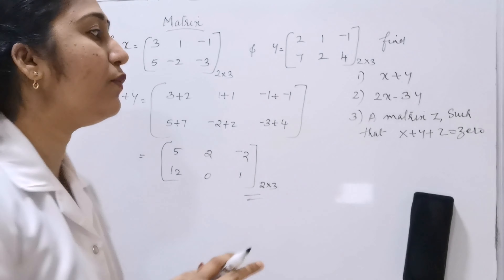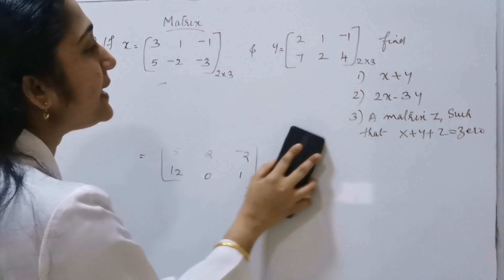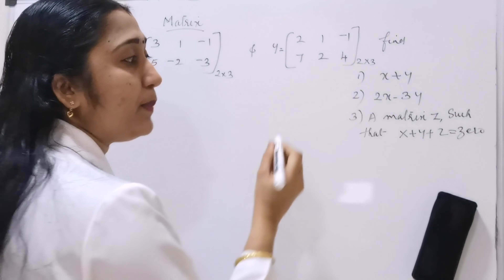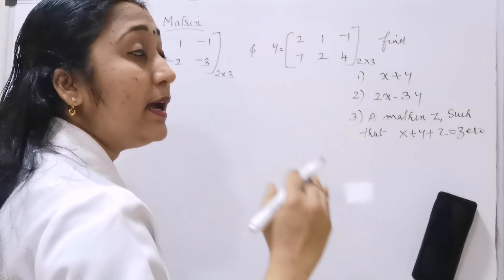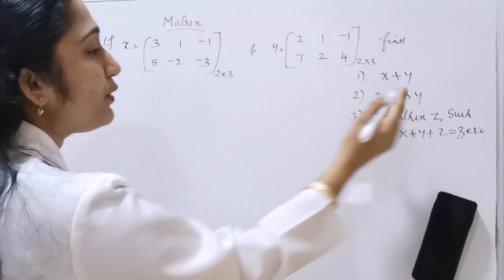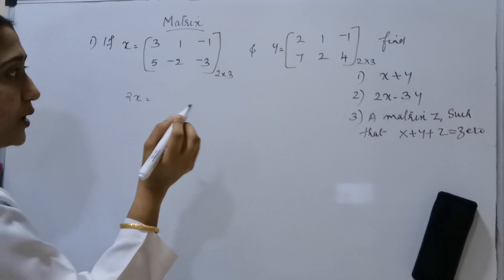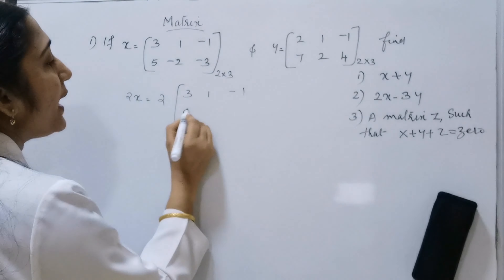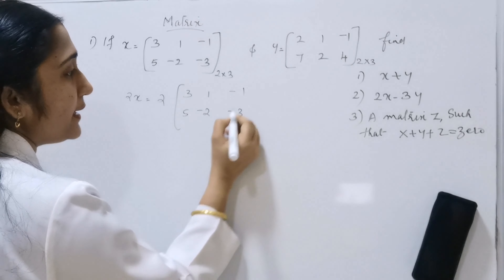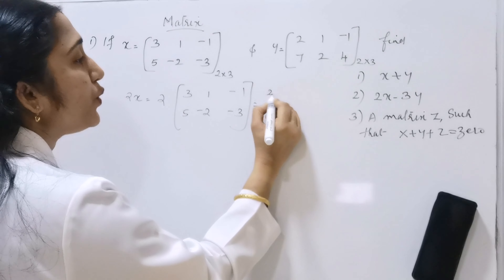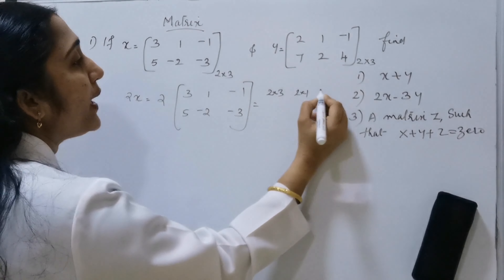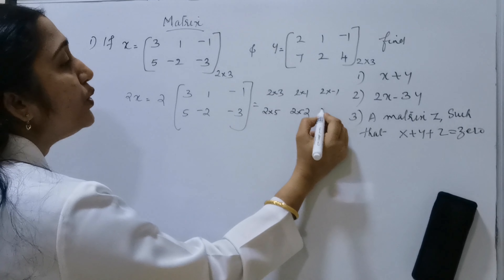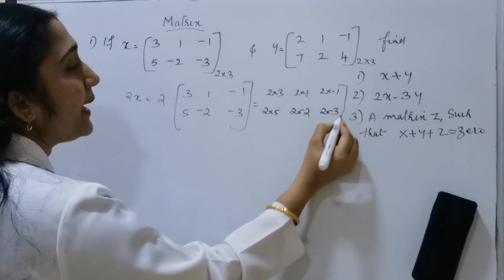Moving on to the second problem: 2X minus 3Y. First we have to find 2X — the scalar multiplication. So 2X equals 2 into the matrix [3, 1, -1; 5, -2, -3]. That gives us: 2 into 3, 2 into 1, 2 into minus 1; then 2 into 5, 2 into minus 2, 2 into minus 3. This is scalar multiplication.